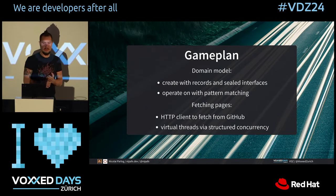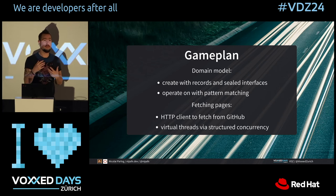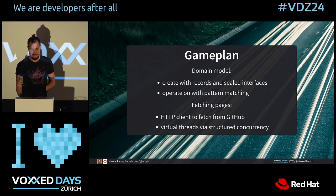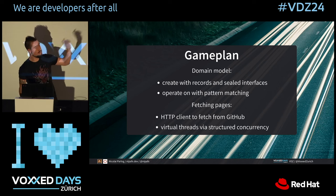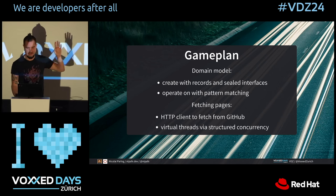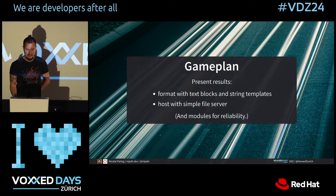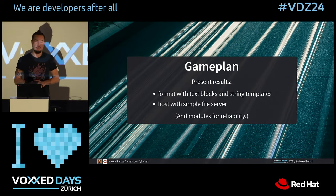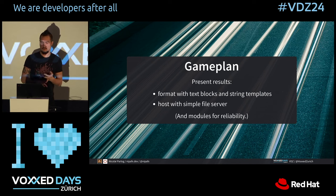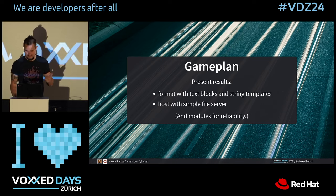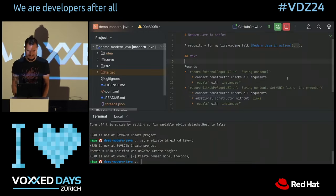The game plan is to use records and sealed interfaces for the domain model, and to operate on them with pattern matching. We're going to fetch the pages with the HTTP client that was added in JDK 11 — I used to say 'the new HTTP client,' but given that it's like six years old now, it's just the HTTP client. We're going to use virtual threads via structured concurrency to access those pages in parallel. We'll present results with text blocks, hopefully get around to string templates, host them with a simple file server locally, and use modules because modules are good.